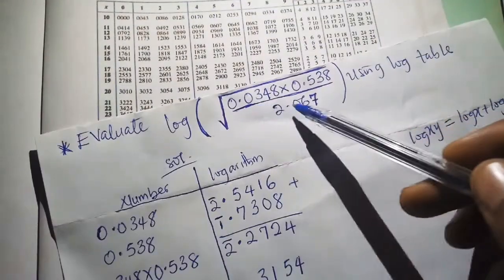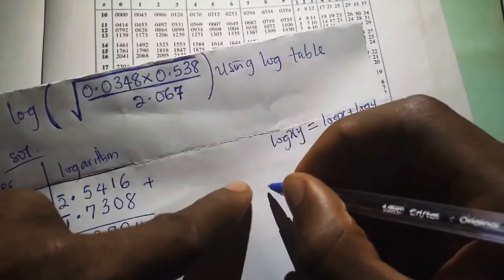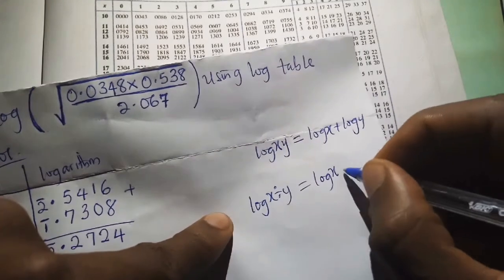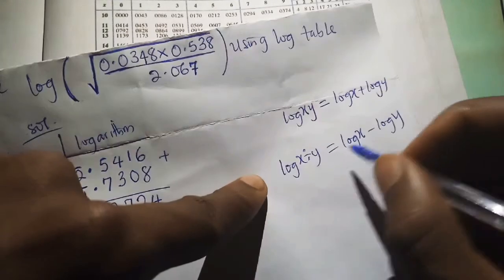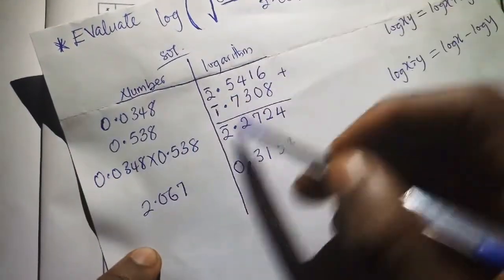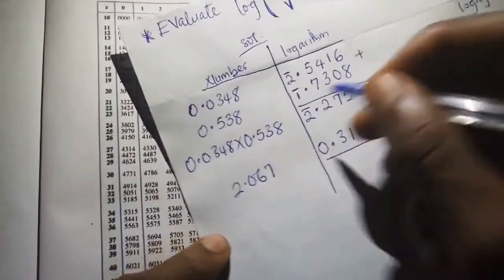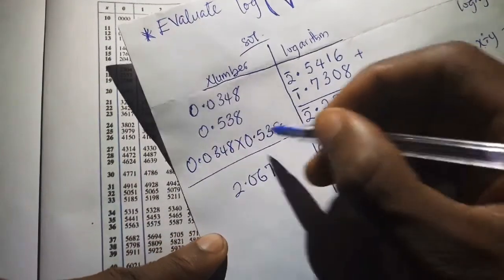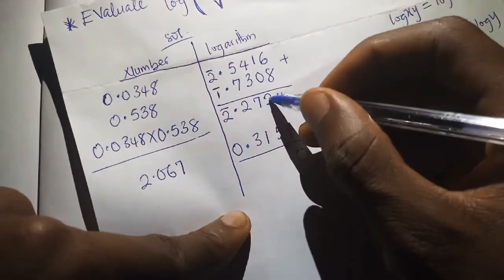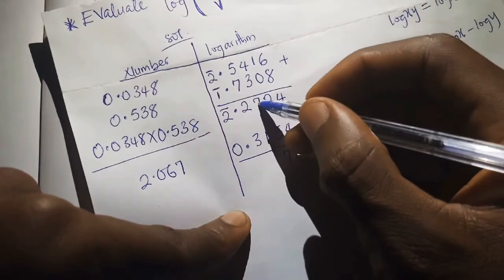We divide these numbers, so we apply the law of logarithms: log(x ÷ y) equals log x minus log y. The log of the numerator is bar 2.2724 and the log of the denominator is 0.3154. We subtract them. In the mantissa: 4 minus 4 is 0; 2 minus 5 — we borrow, making it 12 minus 5 — is 7; 7 minus 1 is 6; 6 minus 5 is... we borrow again.